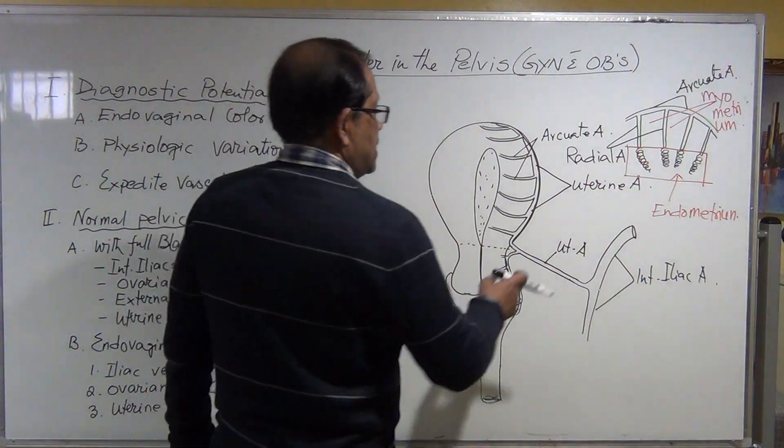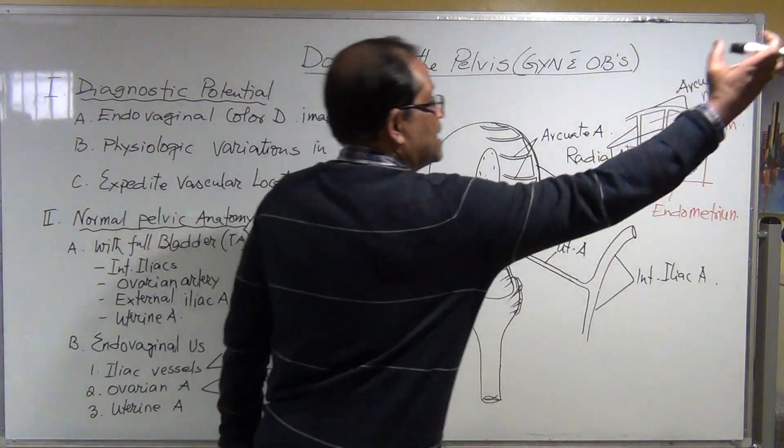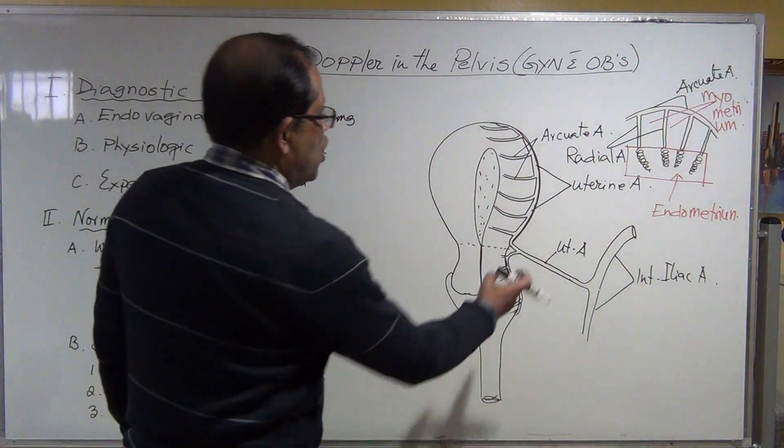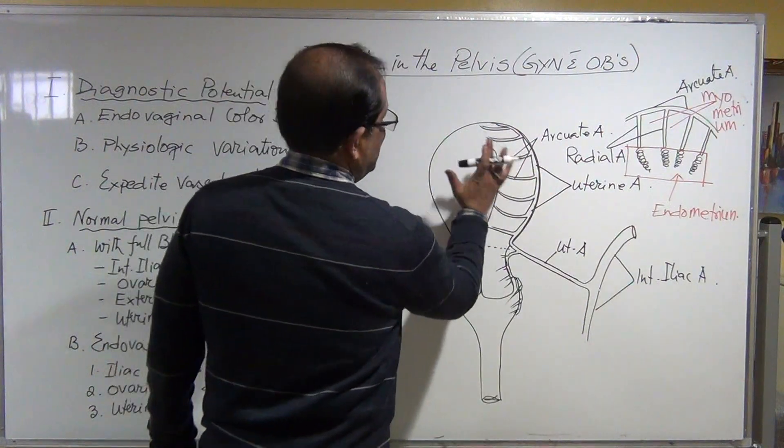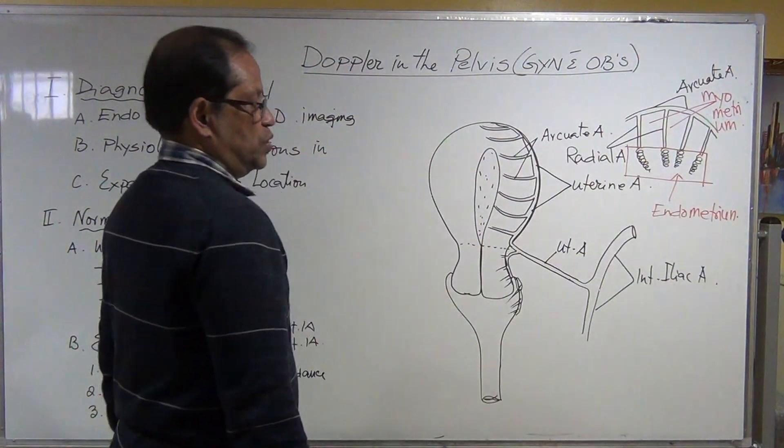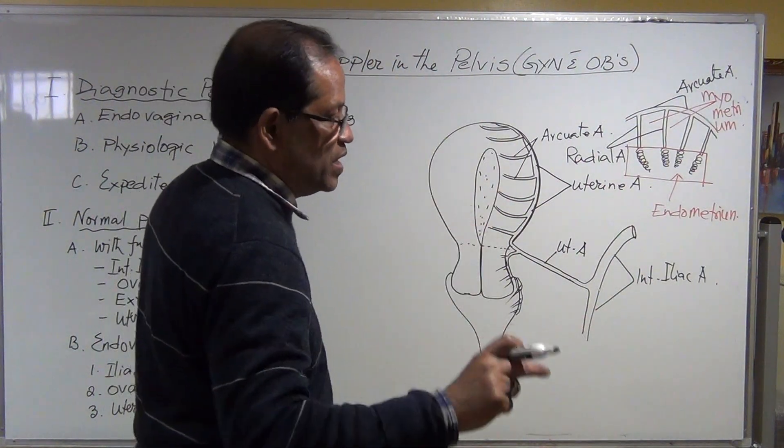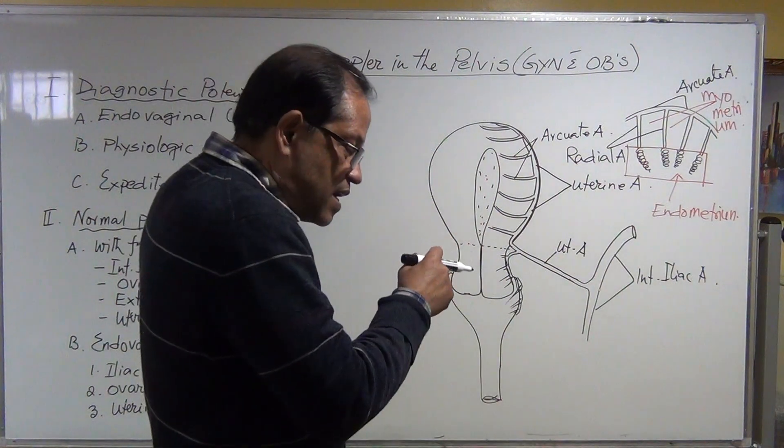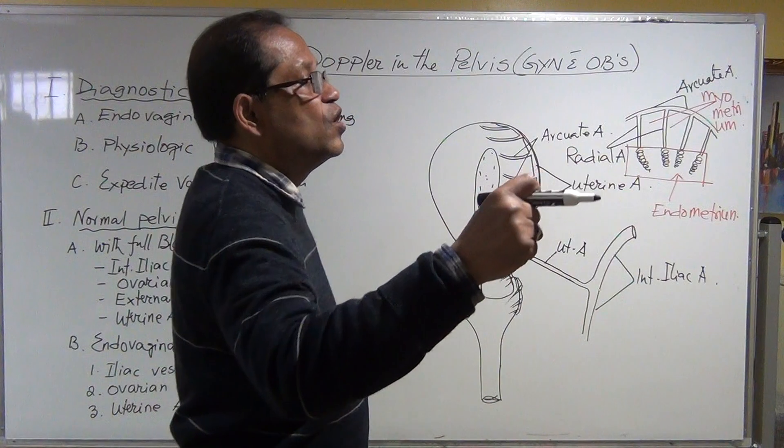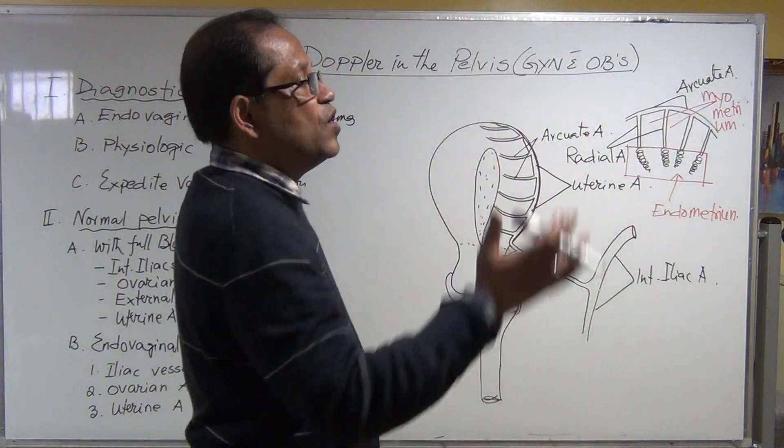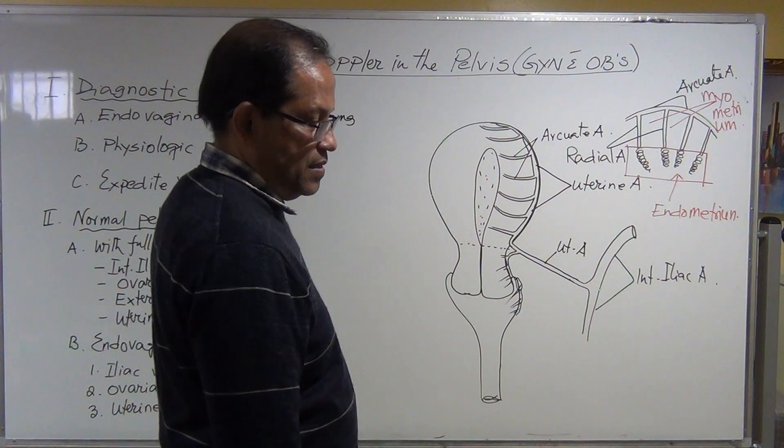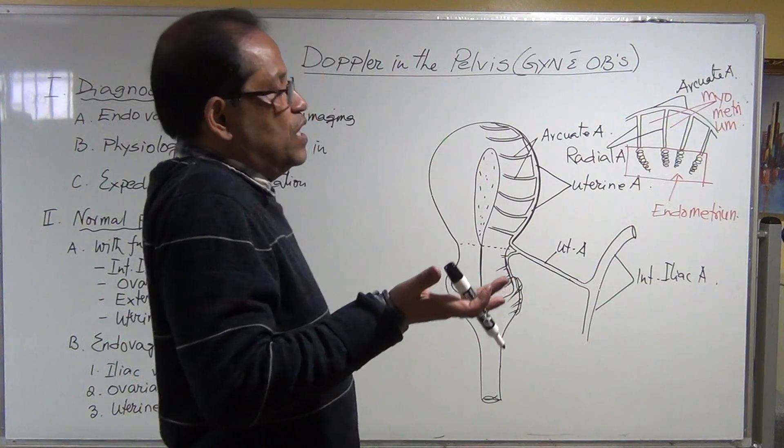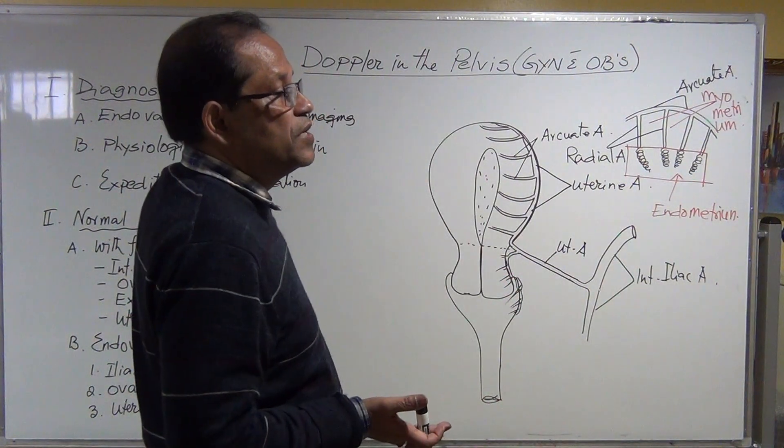The uterus must get more blood from the internal iliac arteries to supply because the demand is more. Distal demand is more, always it has to be low resistivity index, that means the diastolic forward flow and diastolic flow is higher.